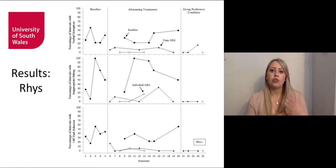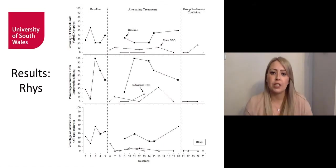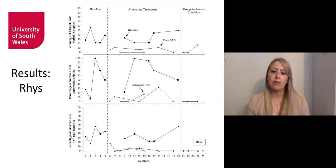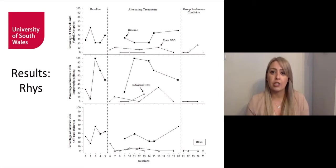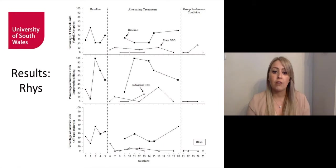During the group preference condition, the team game was chosen three times and the individual game twice. Reece engaged in zero levels of disruptive behaviour during nearly all sessions in this condition for both the team and individual Good Behaviour Game, with the exception of one session.